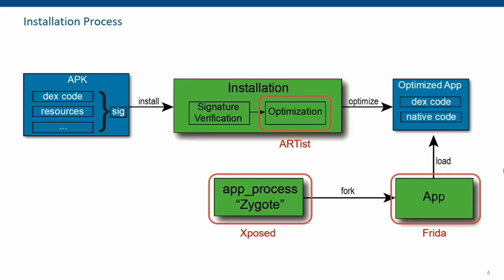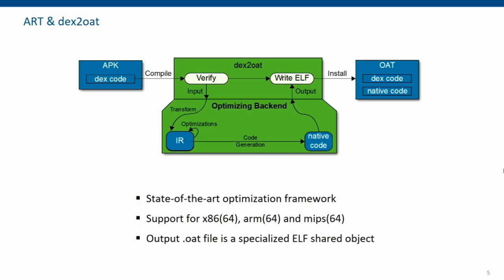On devices running Android Runtime — everything from Android 5 — this optimization step is guided by a tool called Dex2Oat. Dex2Oat is an on-device compiler that transforms the DEX bytecode of an application into a file format called OAT, which is essentially an ELF file — think of it as transforming bytecode to actual native code, a shared native library. It transforms bytecode into a so-called intermediate representation, runs state-of-the-art optimizations on that, and then generates platform-specific code. Keep in mind: this runs on the device, not on the developer side.